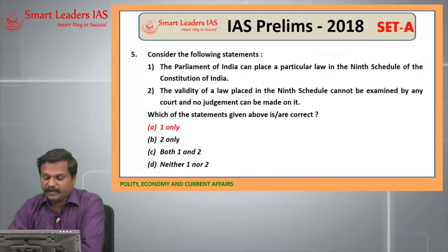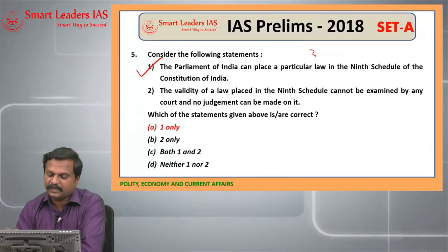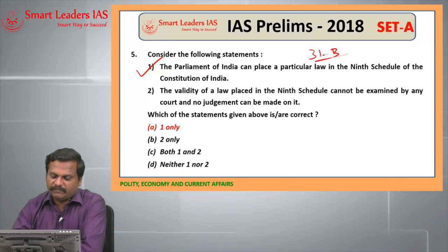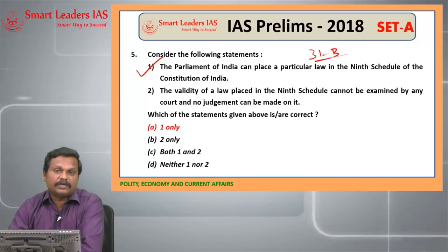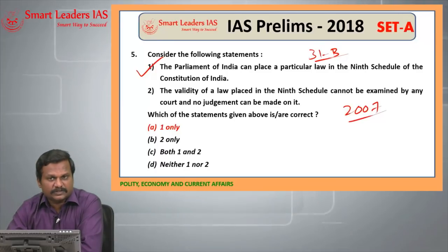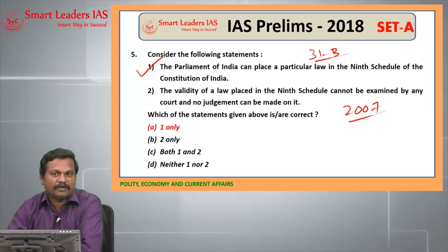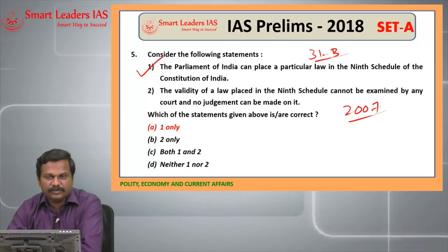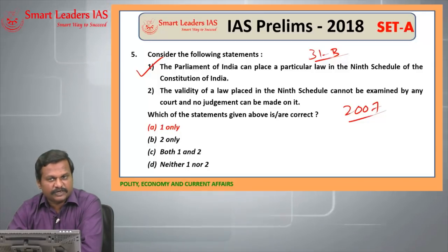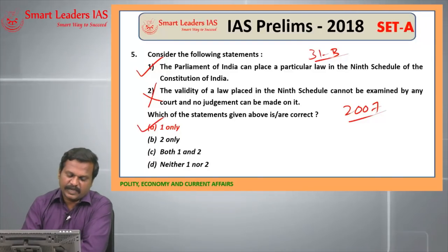Fifth question: Parliament of India can place a particular law in the 9th Schedule of the Constitution — this is a right statement. The First Amendment Act inserted Article 31B, which inserted the 9th Schedule. The validity of a law placed in the 9th Schedule cannot be examined by any court — actually, the Supreme Court in a landmark judgment in 2007 said that laws kept under the 9th Schedule before 24th April 1973 (the date of the Kesavananda Bharati case judgment) will have judicial immunity, but those laws kept on or after this date will come under judicial review. So the second statement is wrong. The answer is 1 only.